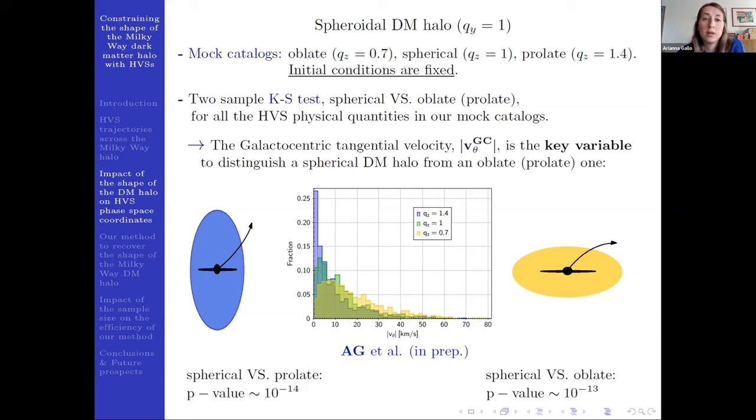So we use a Kolmogorov-Smirnov test to compare the distribution of all the physical quantities we have in our mock catalogs for the spherical and the oblate and for the spherical and the prolate cases. The null hypothesis of the Kolmogorov-Smirnov test is that the two distributions we are comparing are compatible, so are drawn from the same mother distribution.